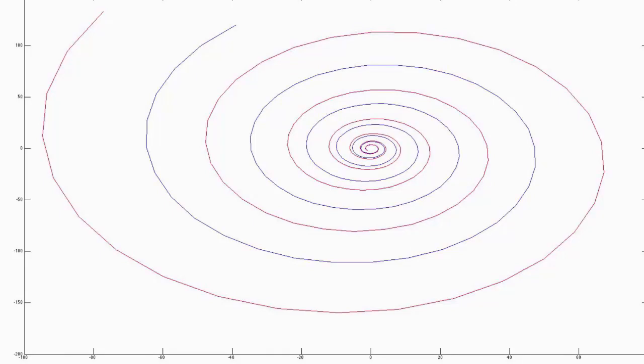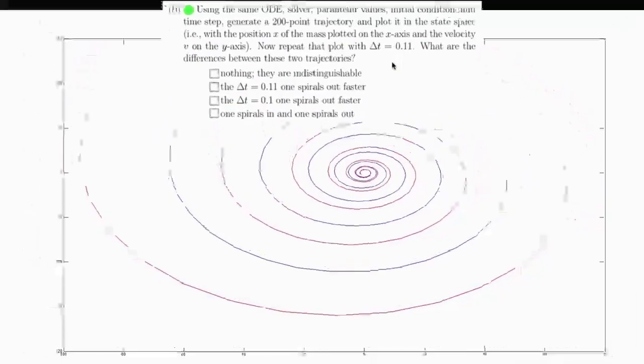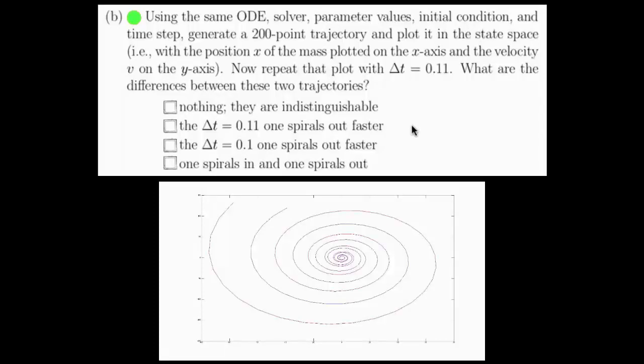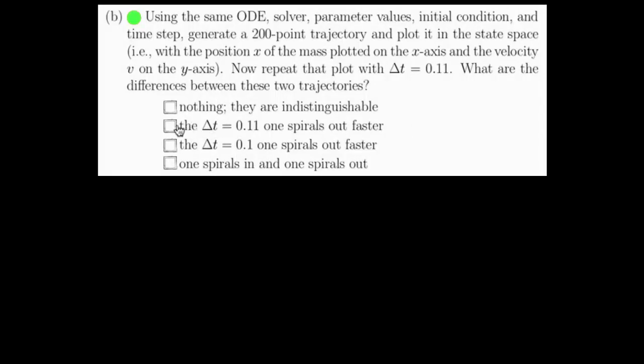As you can see, and as we would expect from the lecture, the red curve spirals out faster. That is, if you take a bigger time step, you're going to step farther off the trajectory, and in this case, you'll spiral out faster. See the lecture for a very nice visualization of this. From this plot, we can see that using the delta-t of 0.11 spiraled out faster.